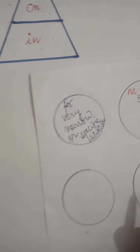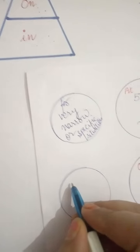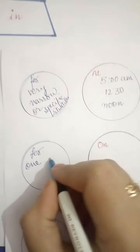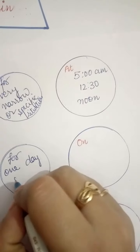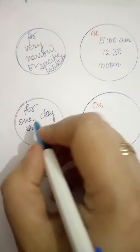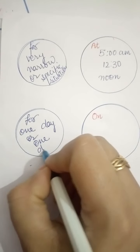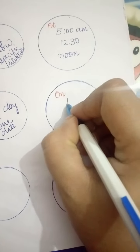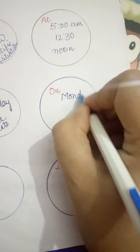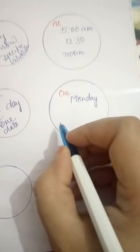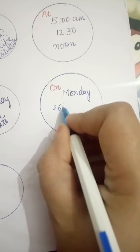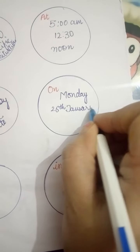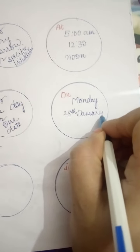So here we write that on is used for one day or one date. For example, on Monday. Monday is a day. On 26th of January means date.